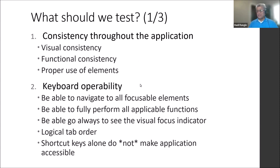By testing keyboard accessibility — something everybody in this room can do — you eliminate a lot of issues. If something is not working with the keyboard, you can say with high probability that task is not accessible for a screen reader either. So we start with keyboard testing first. Keyboard consistency is one of the first items we check.